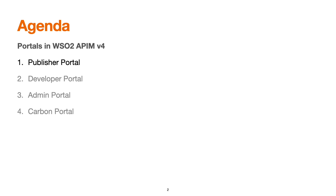Let's quickly check the agenda of this tutorial. In API Manager we have 4 different portals: Publisher Portal, Developer Portal, Admin Portal, and Carbon Portal — sometimes called the Carbon Console. In this session we will see the overview of the Publisher Portal, covering its interface along with the different features and options it provides.